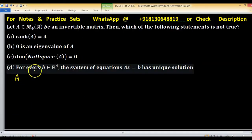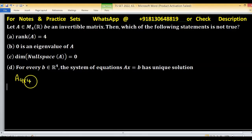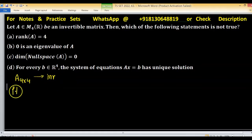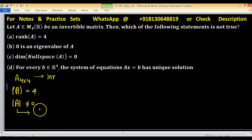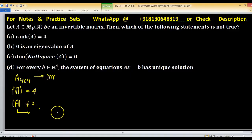Let A be a 4×4 matrix over the set of real numbers and this is an invertible matrix. If this matrix is invertible, then rank of A equals 4. Also you can say in terms of determinant, determinant of A is not equal to 0. The determinant can be written in terms of eigenvalues as the product of eigenvalues. So simply, the product of eigenvalues is also non-zero, meaning 0 is not a possible eigenvalue.